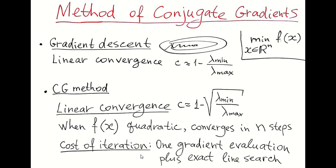On the other hand, the cost of one iteration is one gradient evaluation, but it requires exact line search. In case of quadratic function, exact line search may be performed analytically. In general case, it may require several steps of quadratic or cubic interpolation.